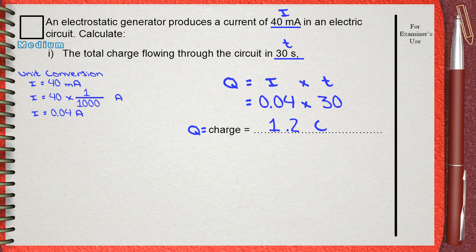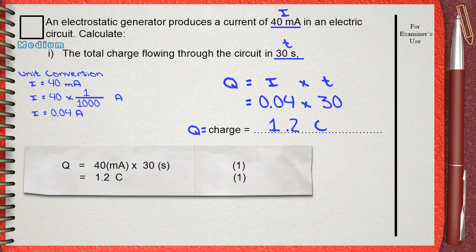Let's see what the mark scheme says. The mark scheme awards one mark for the substitution. This is what we made here. The other mark is for the final answer. Maybe there are no direct marks for the unit conversion. But if you do not make the conversion, your final answer will be wrong. This will make you lose the second mark.